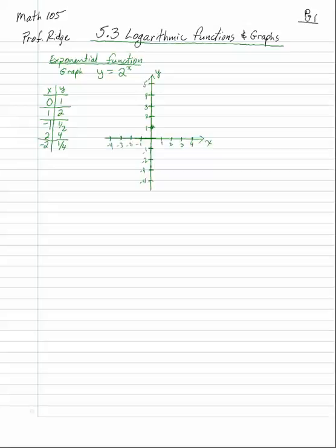So we've plotted the points (0,1), (1,2), (2,4), (-1, 1/2), (-2, 1/4). And remember, it's an asymptote — as you go to negative infinity, it gets closer to 0. So that's y equals 2 to the x.